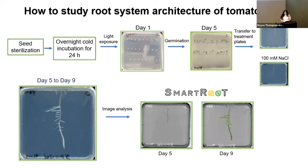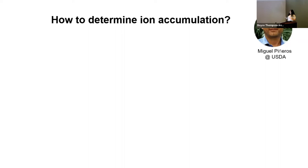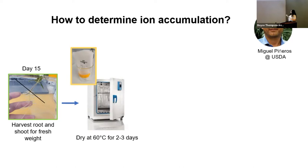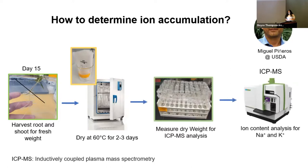After we finish this scanning period, we wait till day 15 to harvest these seedlings. We harvest the root and the shoot, and we measure the fresh weight. Then we store these samples in paper bags that are transferred to an oven, where we wait for them to dry at 50 degrees Celsius for a couple of days. Once dry, we transfer them to ICP-MS tubes, measure the dry weight, and then send them to Miguel Siniero's lab at USDA for ICP-MS ion content analysis for sodium and potassium.